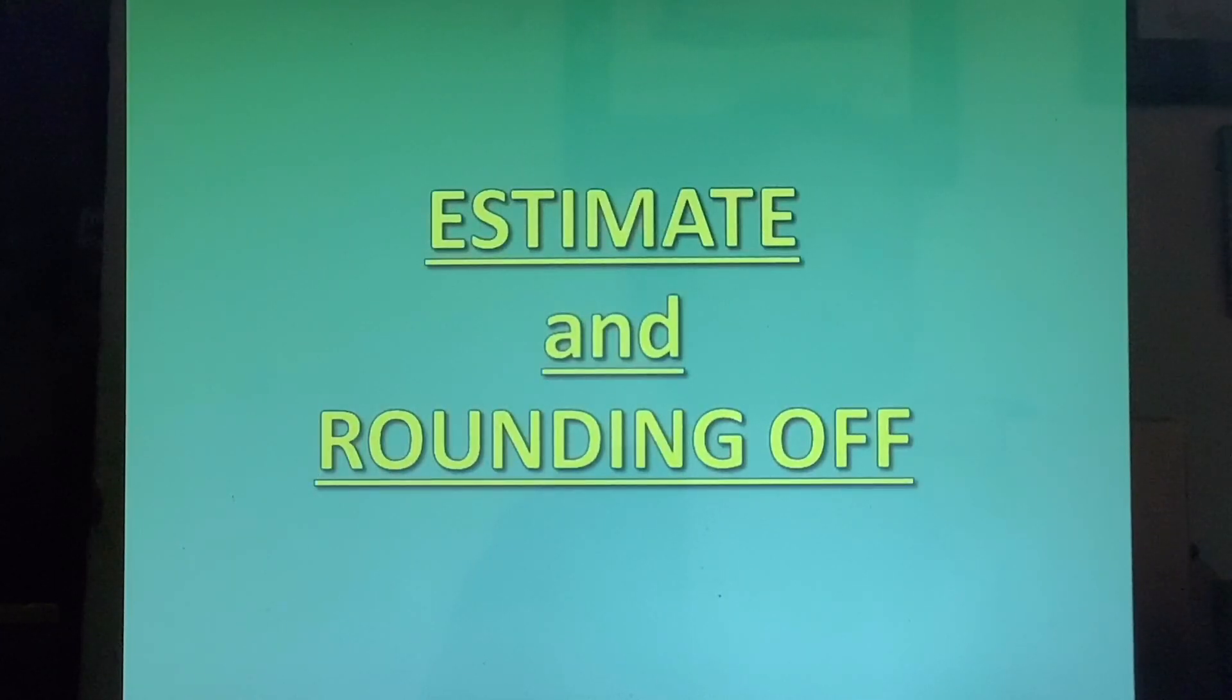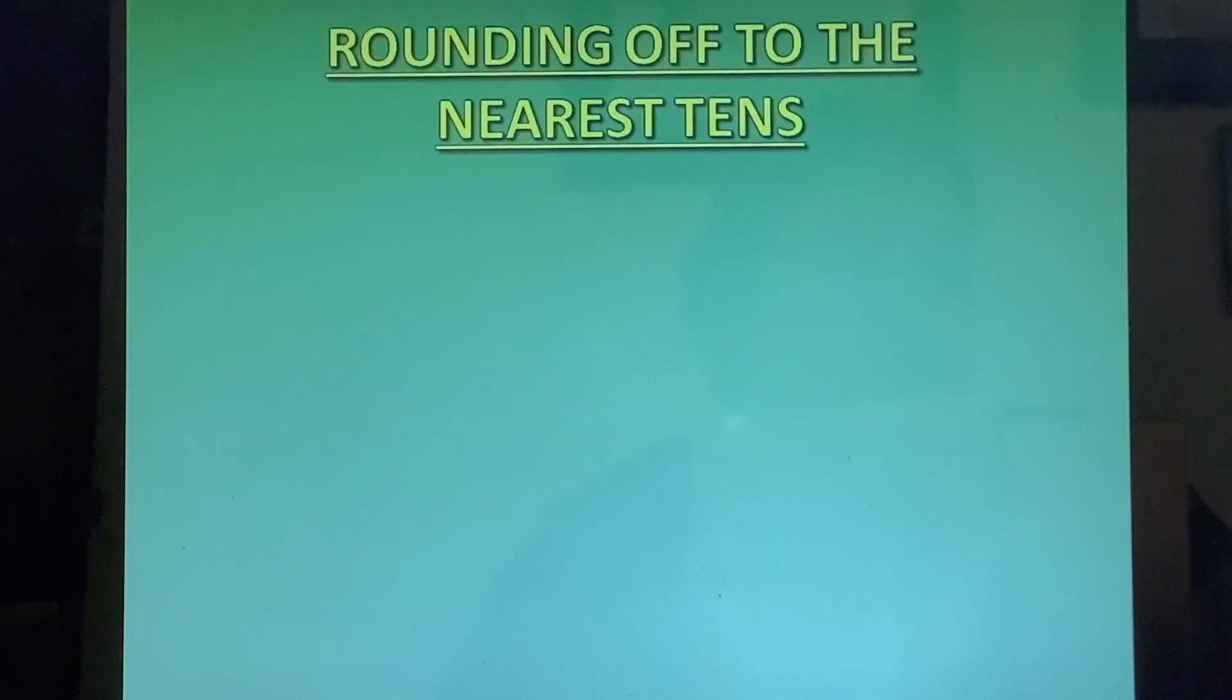Let us go to the next topic, estimate and rounding off. Supposing we are sitting in an auditorium and we want to know how many students are there. Supposing there are 398, we can conveniently say there are around 400 students. Or if there are 502 students, you can say there are around 500 students. So this is called rounding off and giving an estimated answer.